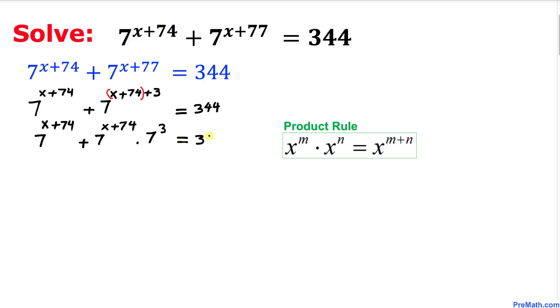And here I can see that this 7 to the power of x plus 74 and this same thing, they are in common, so we can easily factor that one out. So this could be written as 7 to the power of x plus 74. I can factor that one out, and inside parentheses is going to be 1 plus 7 to the power of 3, equal to 344.